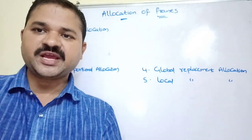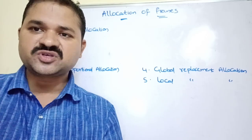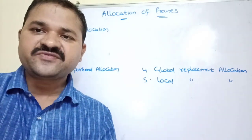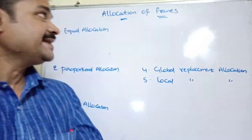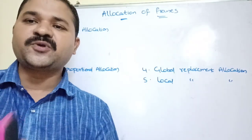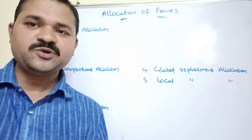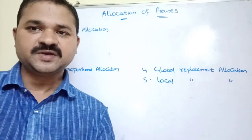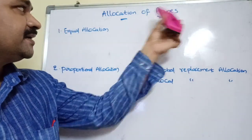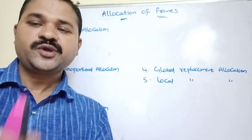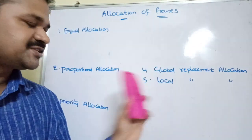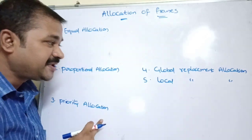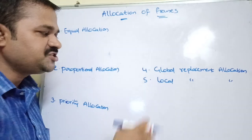Let's see about allocation of frames. A CPU can execute a process only if it resides in main memory. Generally, main memory is divided into equal-size partitions called frames. The operating system can allocate frames to a process using five approaches: equal allocation, proportional allocation, priority allocation, global replacement allocation, and local replacement allocation.